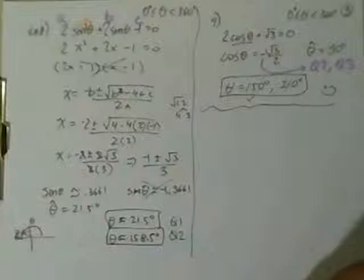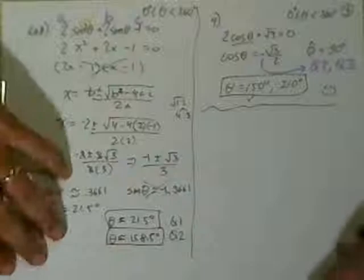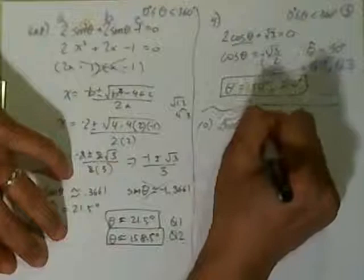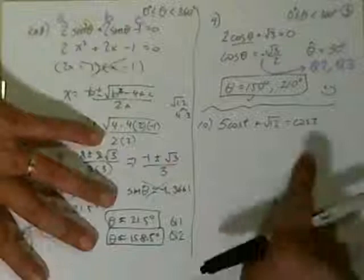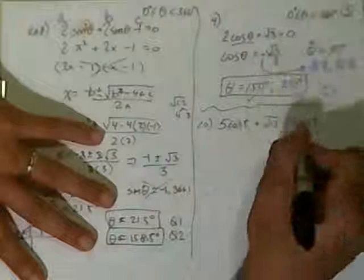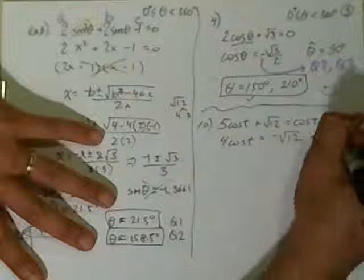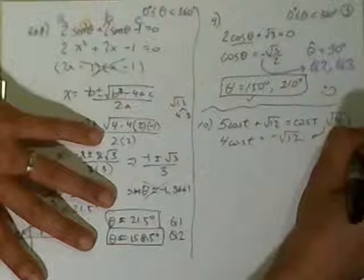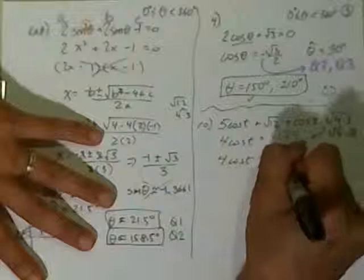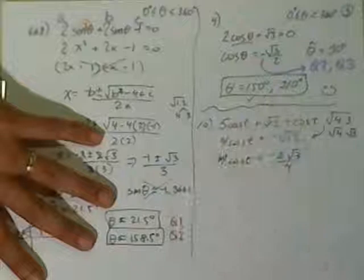Let's do number 10. 5 cosine of angle t plus root 12 is equal to cosine of t. Well, the first thing is it's not quadratic, it's linear. So I'm going to move this guy over. If I subtract the cosine of t, I get 4 cosine of t. It's equal to negative root 12. We have to simplify that radical. That's going to be root 4 times 3, which is root 4 times root 3, which is 2 root 3. 4 cosine of t is equal to negative 2 radical 3. Divided by 4, that's going to be that right there. Reduce that. That becomes negative root 3 over 2.